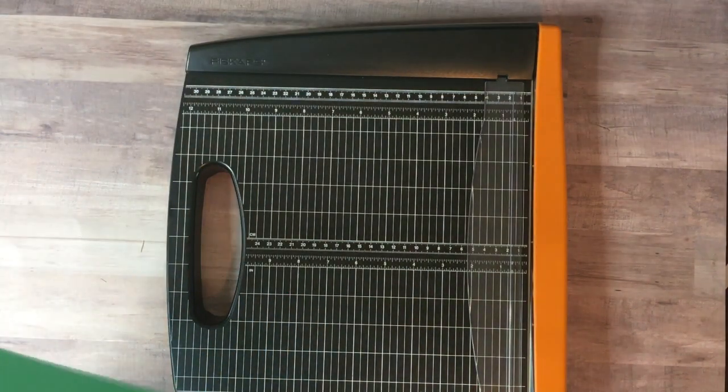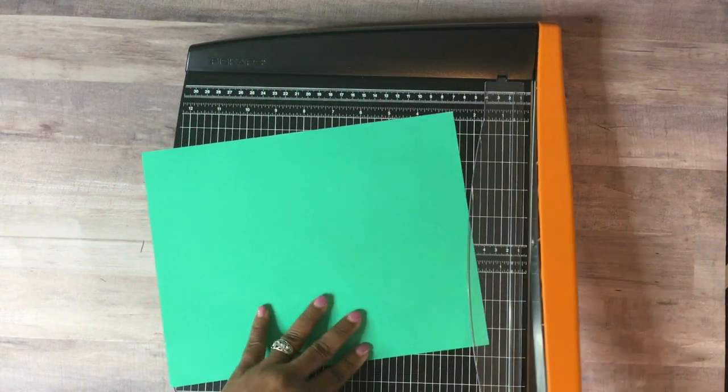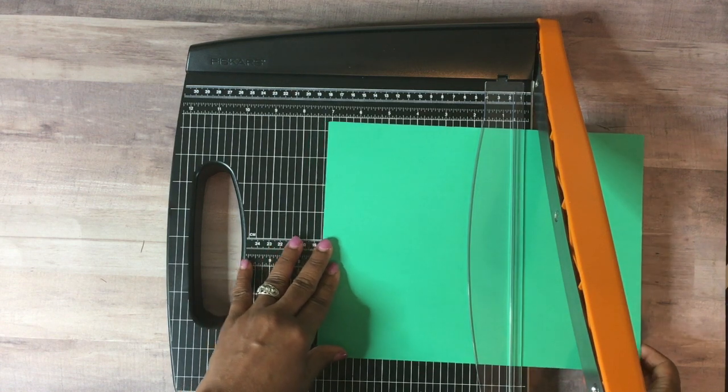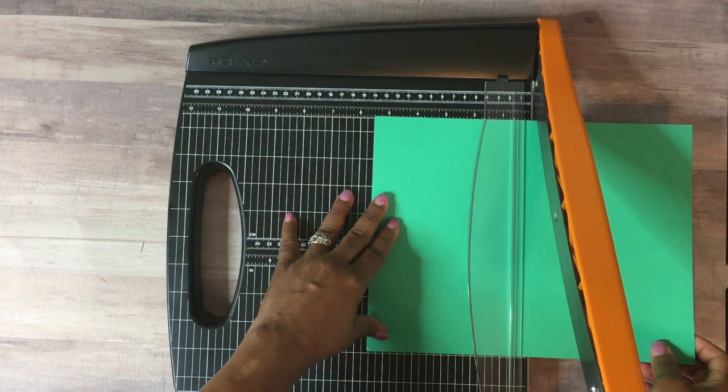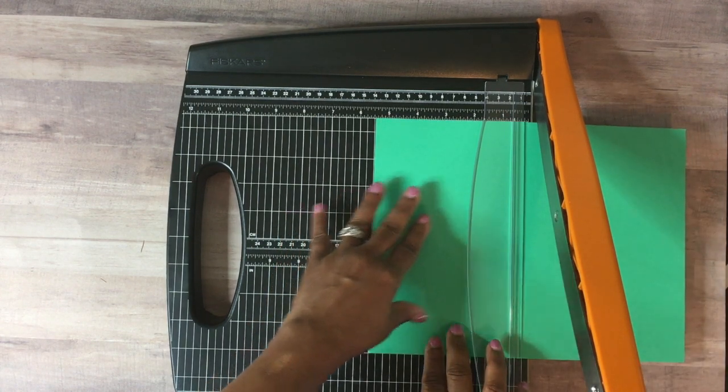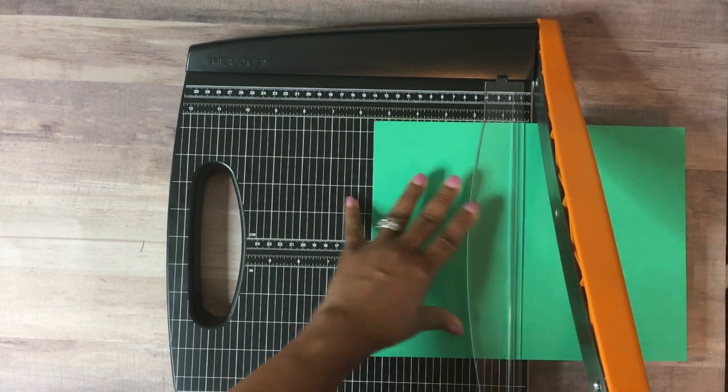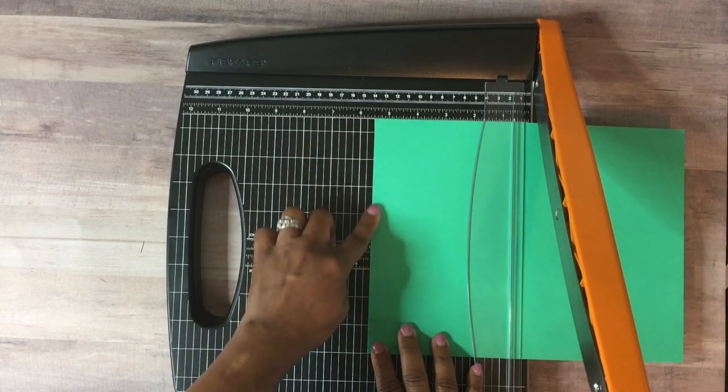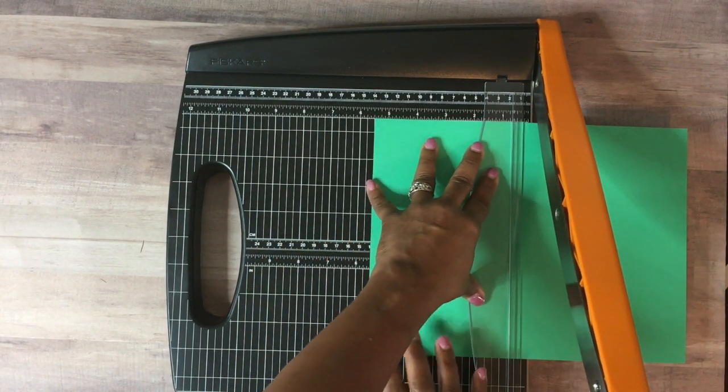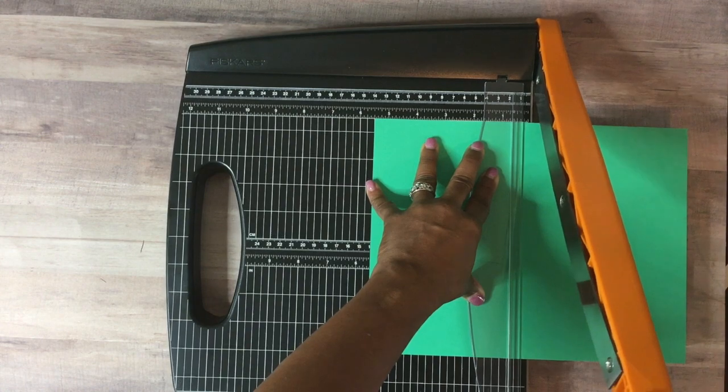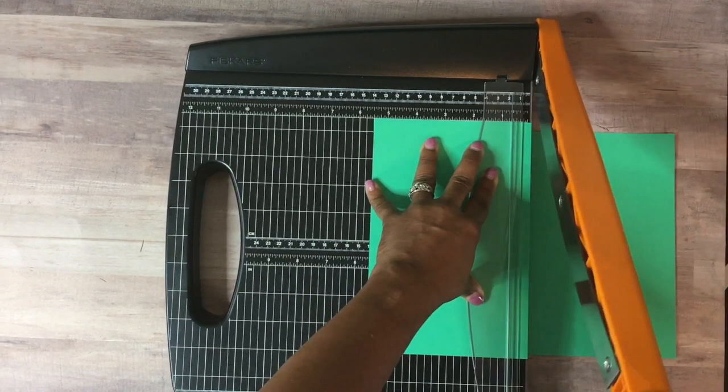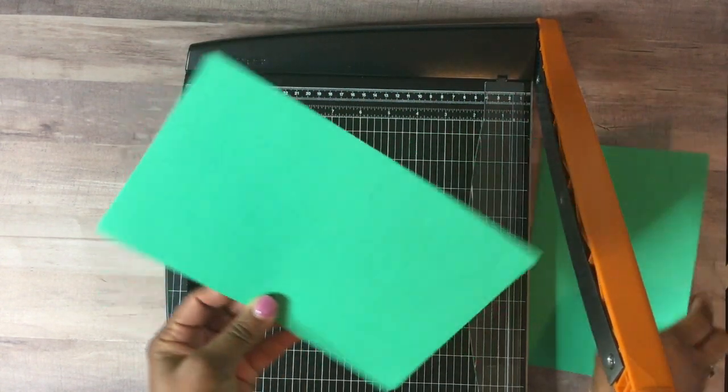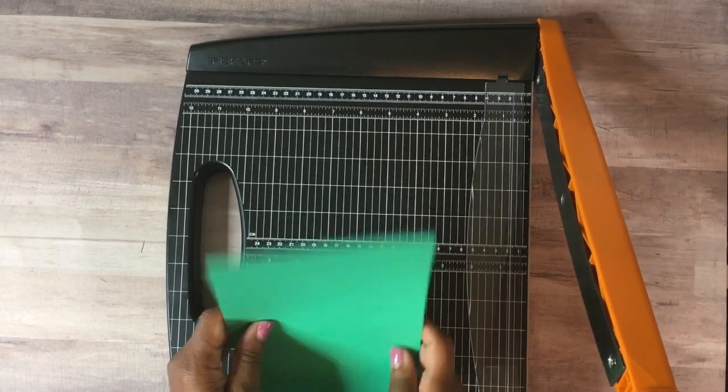So next, let's try our regular cardstock. This is one paper here. Let's put this at five and a half. We'll hold our guard down. You have to make sure your paper is lined up. Come down to your grid and make sure your paper is lined up all the way down. You hold your grid and then you bring your handle down. That is really a nice cut. No fraying or anything like that.